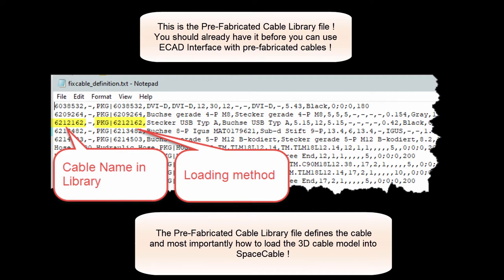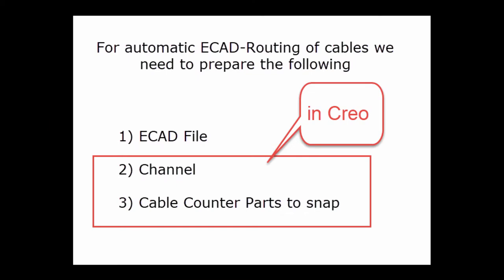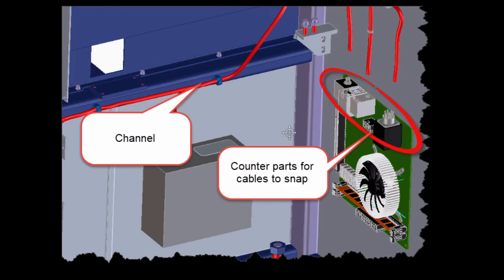This is an example of a prefabricated cable library — you all have it in the delivery. You can see the example contains five cables inside.